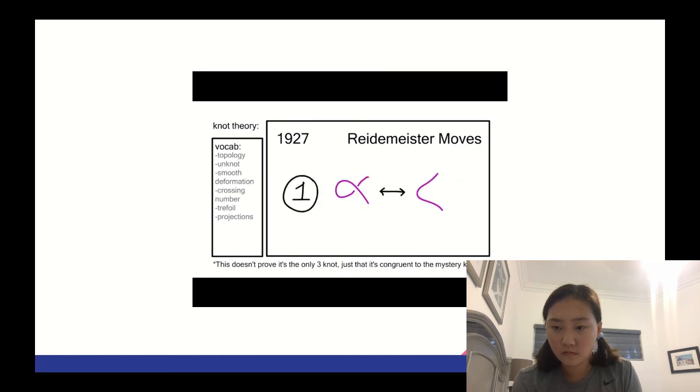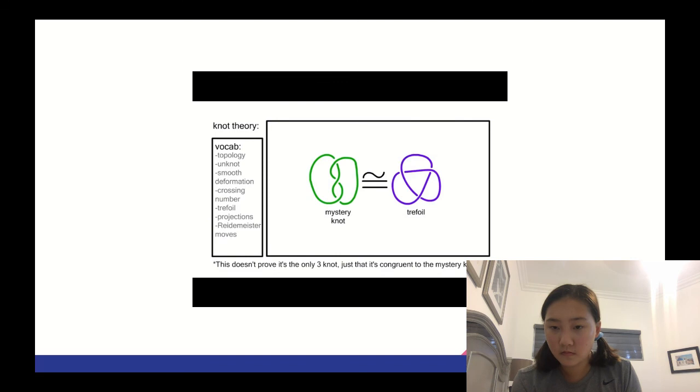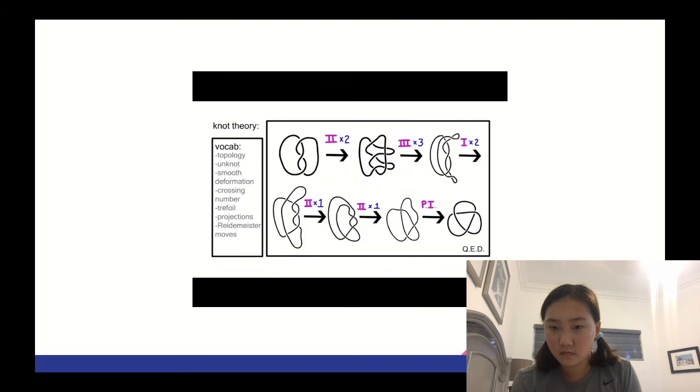The first is a simple twist. The second is moving one string over or under another. And the final, most complicated move is to move a string over or under a crossing. Using these moves, we can diagram a proof showing that the mystery knot is really a different projection of the trefoil.